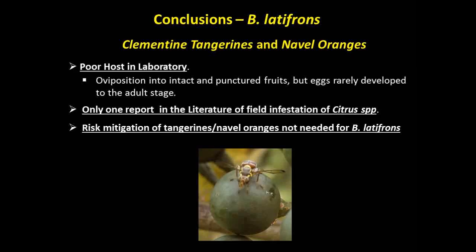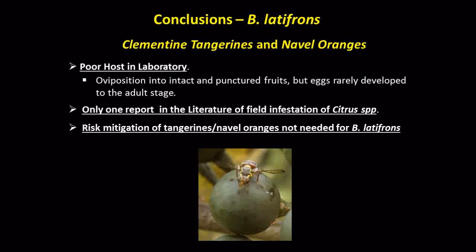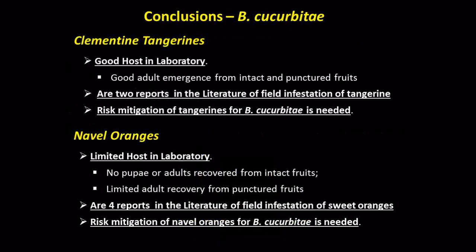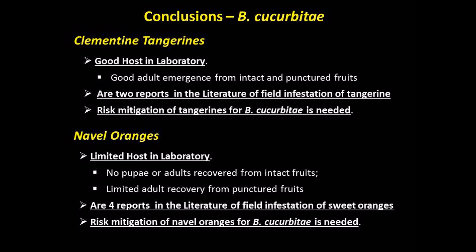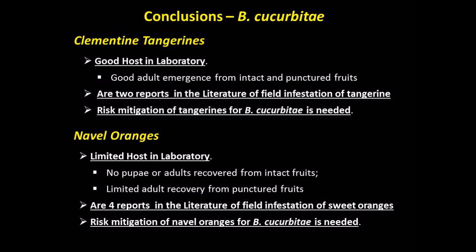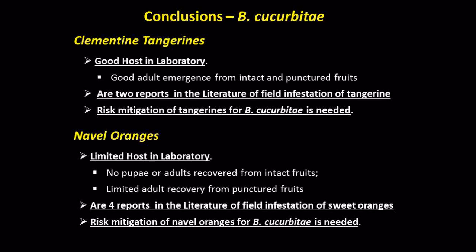Based on our results, combined with the presence of only one report in published literature of field infestation by Bactrocera latifrons of any citrus species, we conclude that risk mitigation of tangerines and navel oranges is not needed for Bactrocera latifrons. Although the fly is ovipositive into both intact and punctured fruits, eggs rarely develop to adult stage. However, we conclude that risk mitigation for tangerines and navel oranges for melon fly is needed. There was good adult emergence from both intact and punctured clementine tangerines, and there are two reports in the literature of field infestation of tangerines by melon fly. Although there was no adult melon fly emergence from intact navel oranges, there was some adult recovery from punctured fruits, and there are four reports in published literature of field infestation of sweet oranges by melon fly.